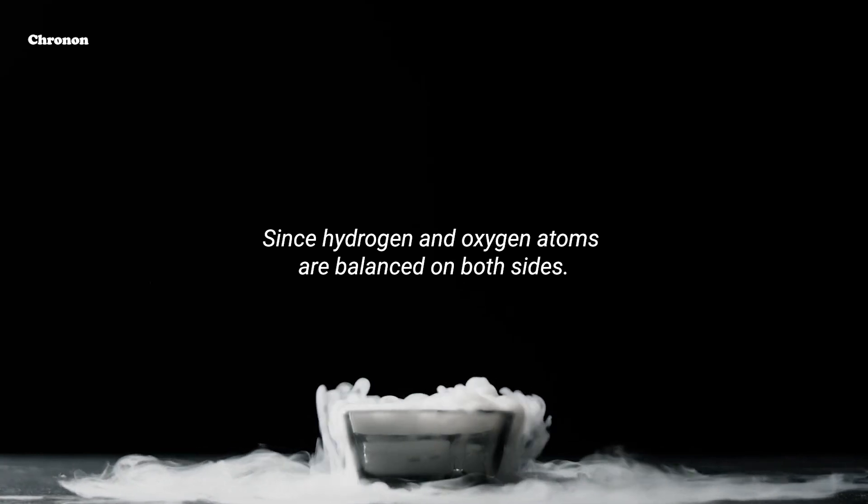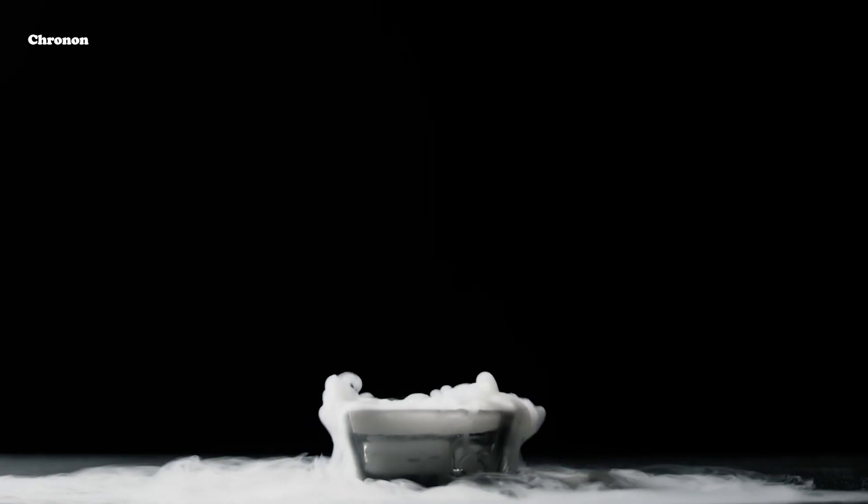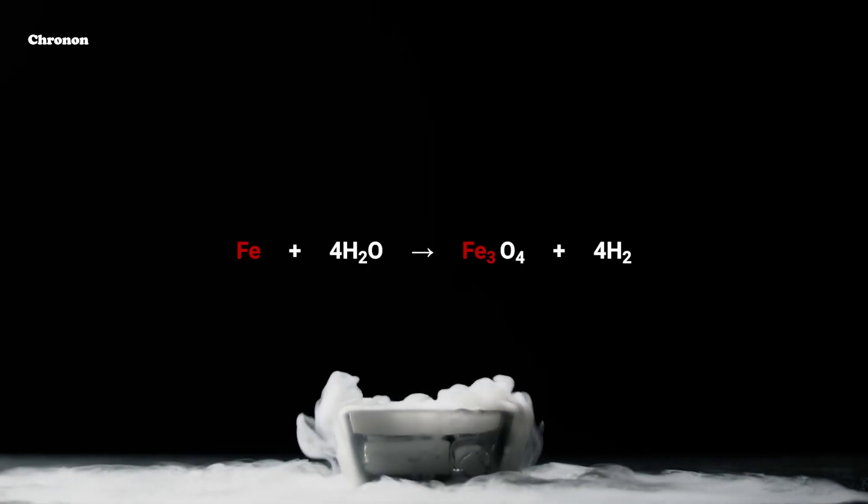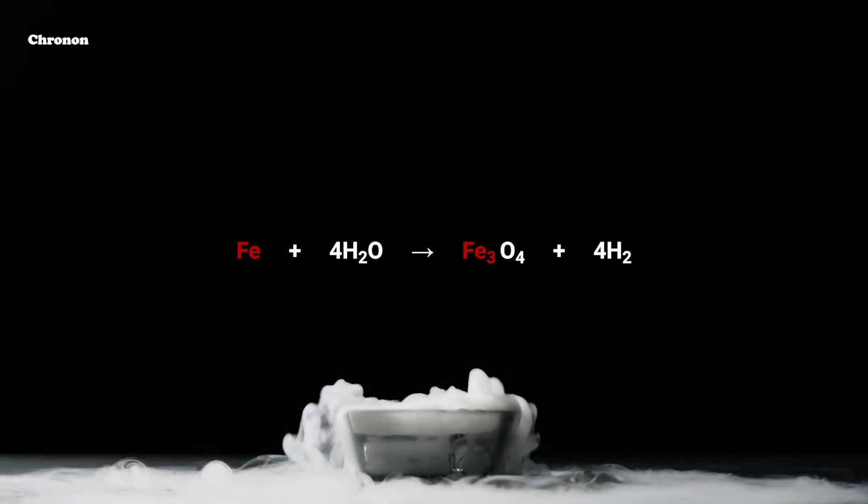Since hydrogen and oxygen atoms are balanced on both sides, we have left with only one unbalanced element. That is iron. We can see that there is only one iron atom on the left hand side and 3 iron atoms on the right hand side.